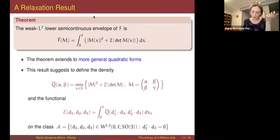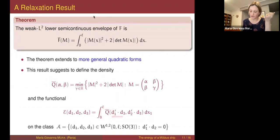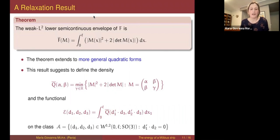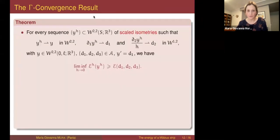This provides the guess for the Gamma limit: a one-dimensional functional with a limiting density defined in terms of curvature and torsion, integrated over x₁. For simplicity, I express the Gamma limit as a function of the directors, which must form an orthonormal frame satisfying the geodesic-curvature-equal-to-zero condition.